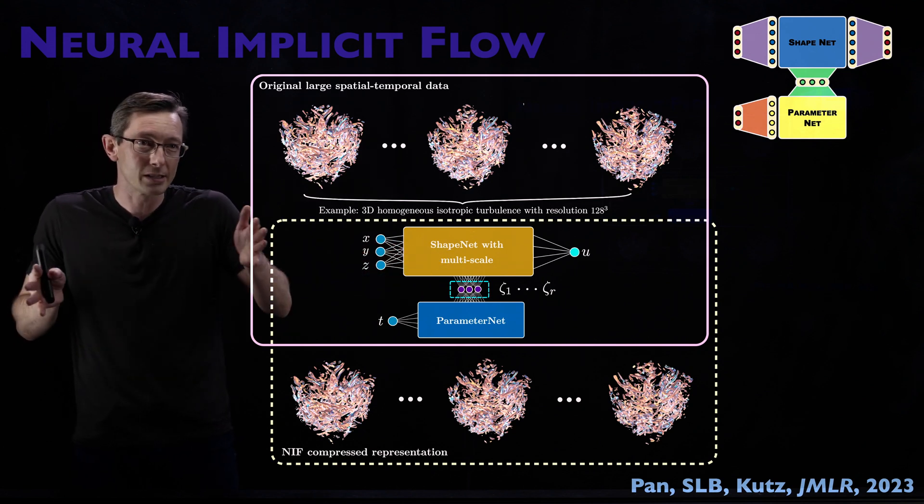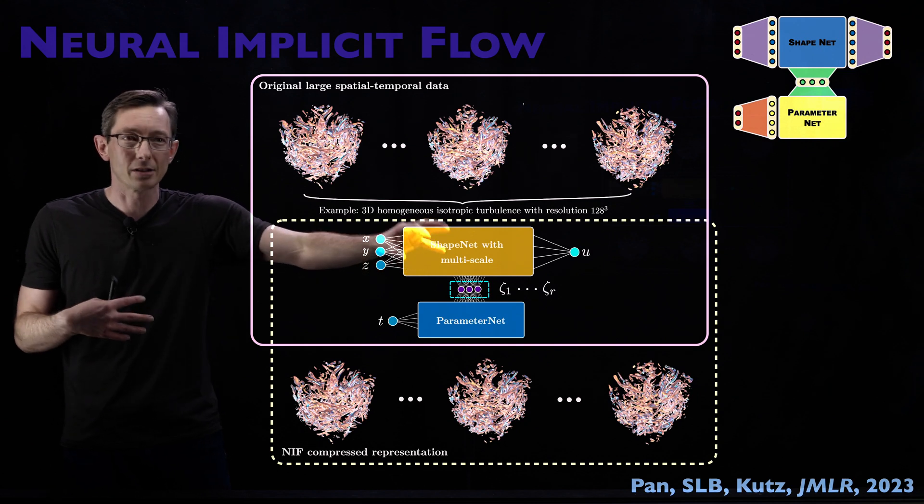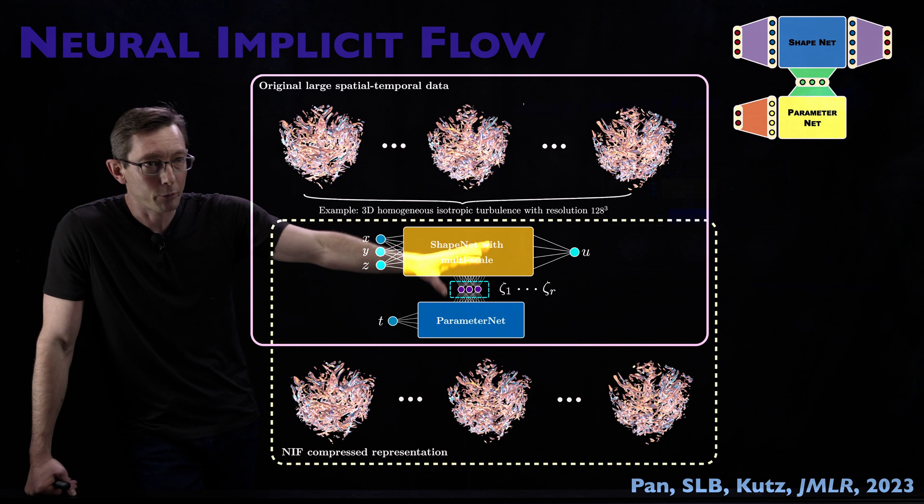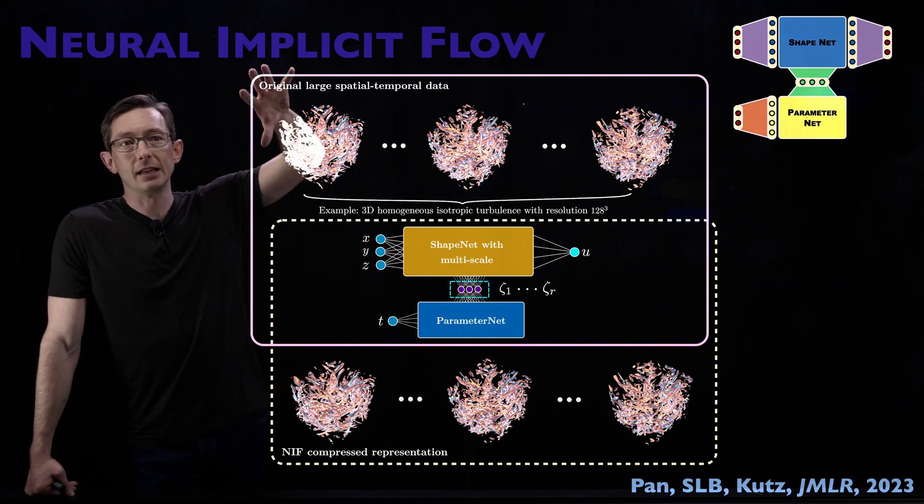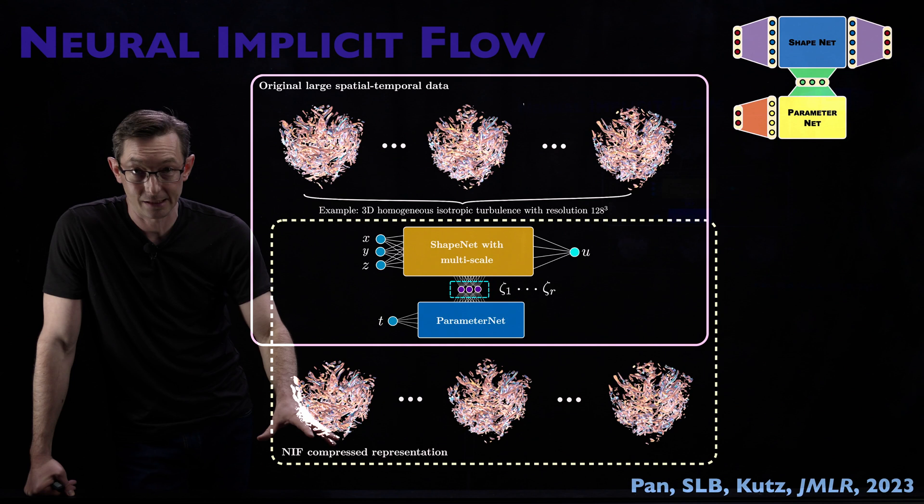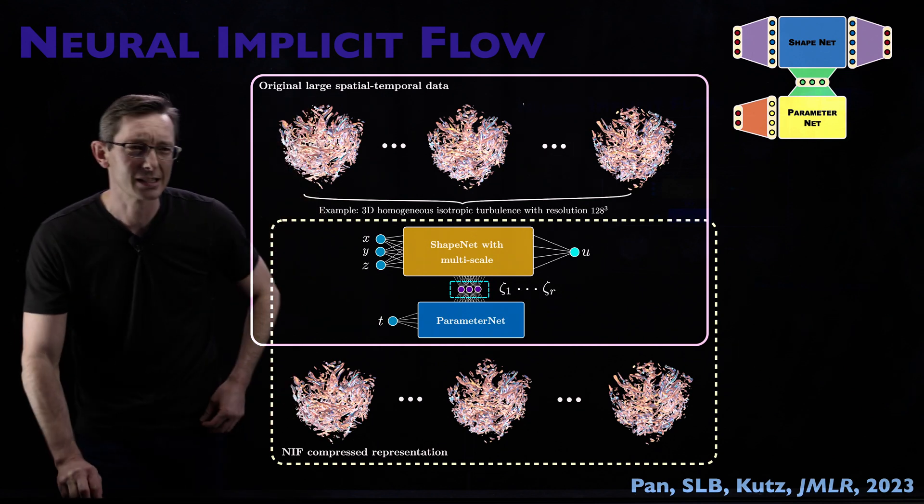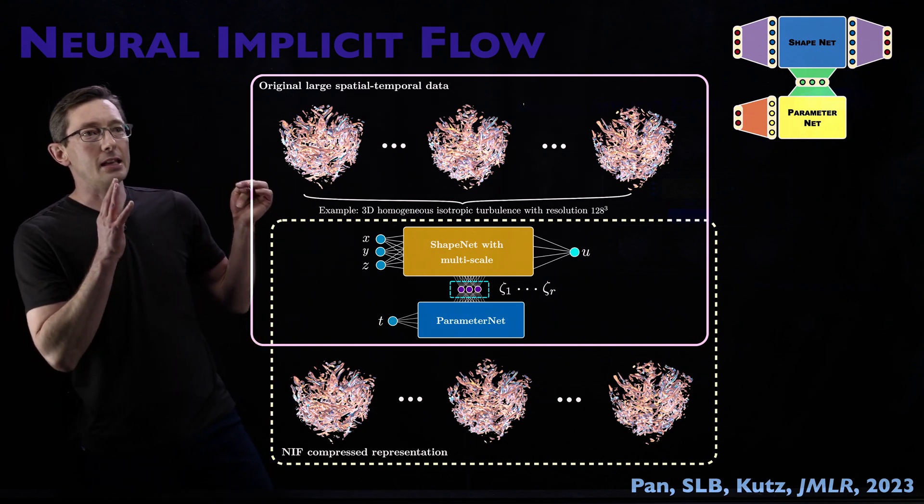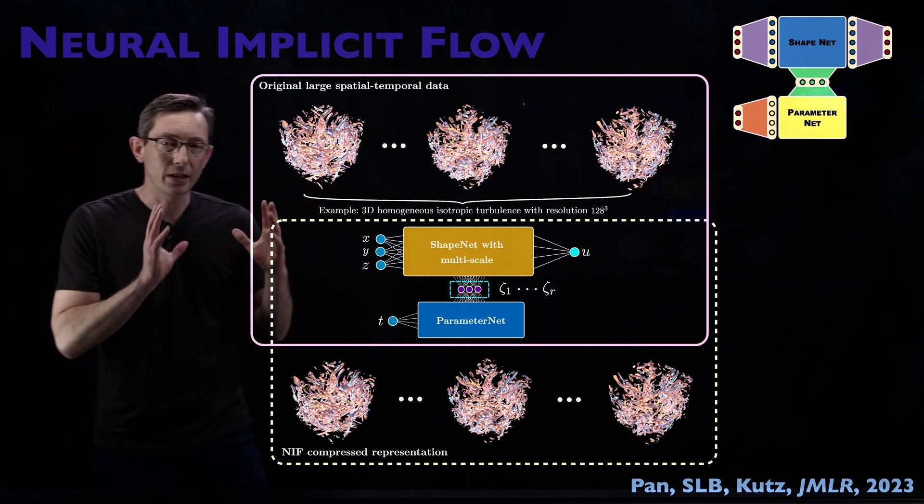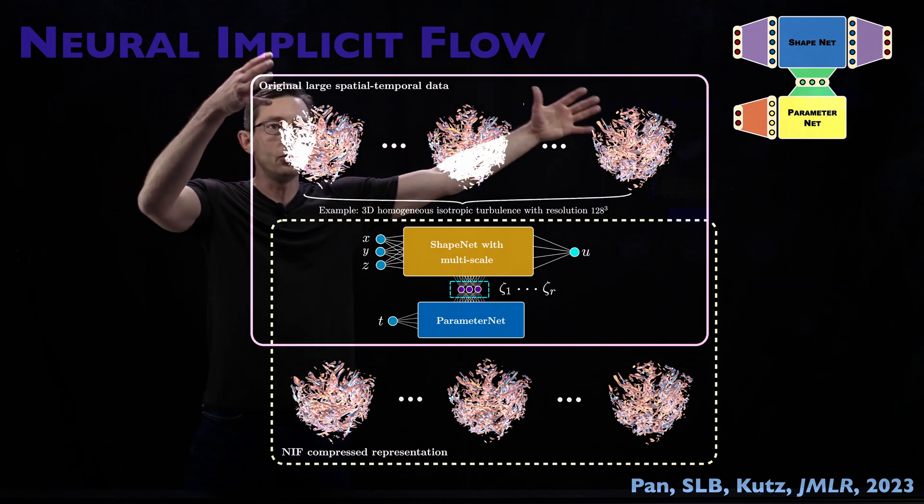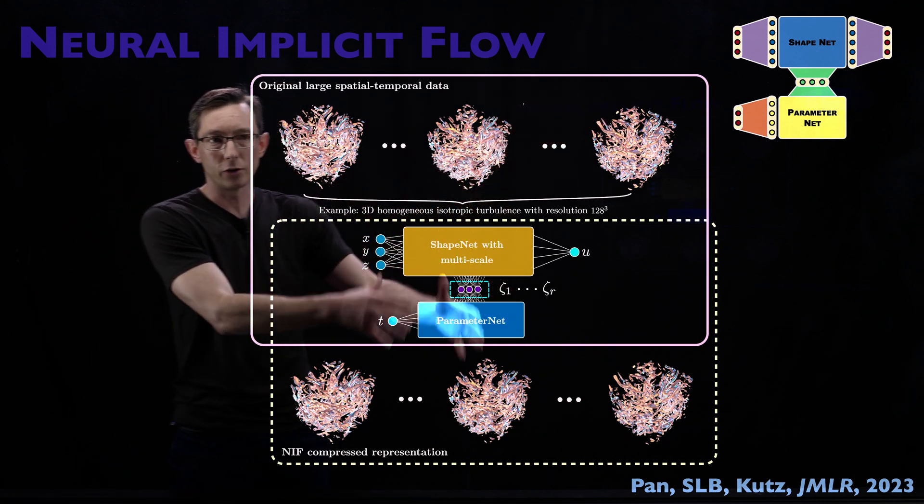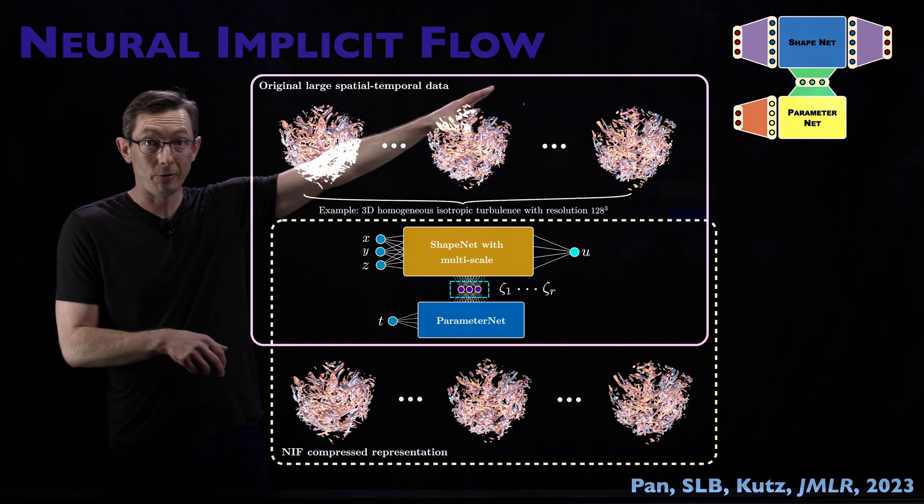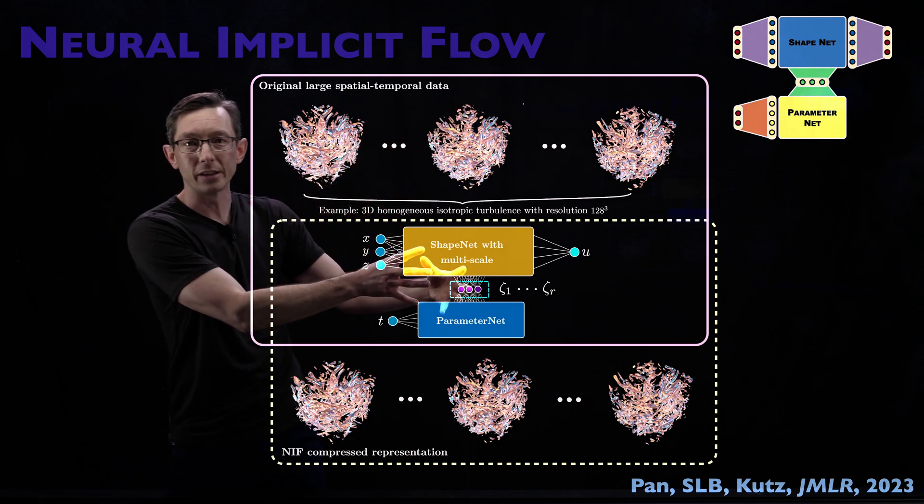There are ResNet versions of Shape Net, there are multi-scale Shape Nets. There's a lot you can choose to represent these shape functions here. But with an appropriate multi-scale Shape Net, you can actually build a very compressed version of this data set. And actually this is something that surprised all of us when Xia Wu shared this result with us.